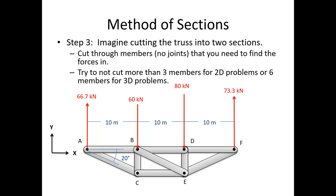Step three is to imagine cutting the truss into two sections. Cut through members, not through joints, and generally cut through the members where you are asked to find the forces. For example, if asked to find forces in members BD and CE, cut right down through the middle. In 2D problems, try not to cut through more than three members, since we get three equations in 2D, to keep the system solvable.